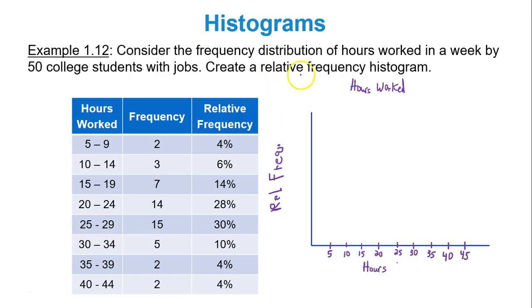Next, my relative frequencies go as high as 28, or as high as 30%. So I'll do my y-axis in 5s as well. So I have 5, 10, 15, 20, 25, and then 30. 30 is where I can stop. My first class is 5 to 9. So from 5 to 10, because that's how my x-axis is labeled, I'm going to draw a rectangle that goes up to 4%. So from 5 to 10, we go up to 4%. You can even shade the rectangle if you want, if you like to be fancy and artistic.